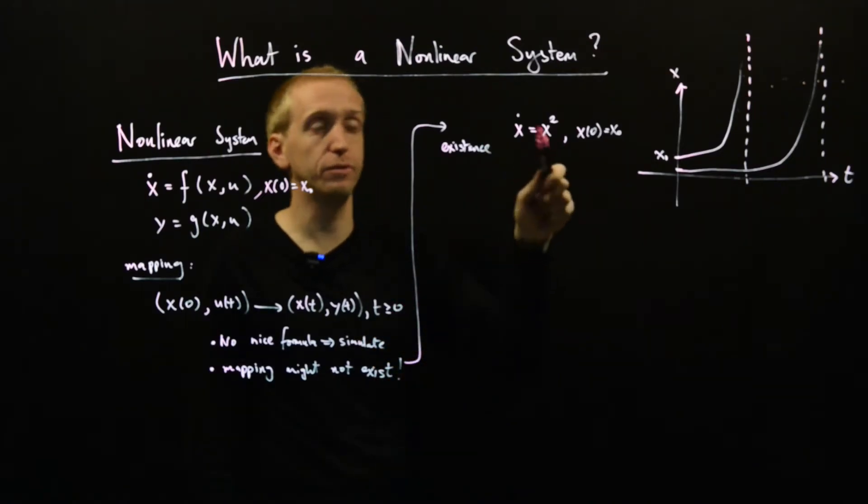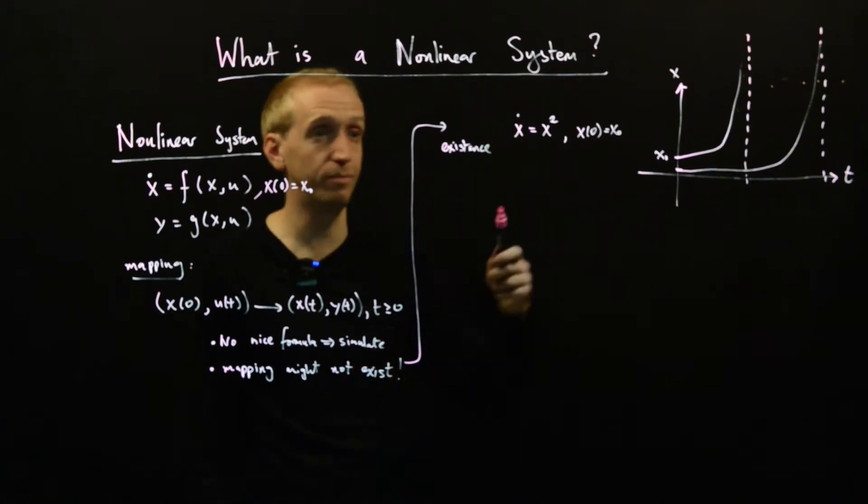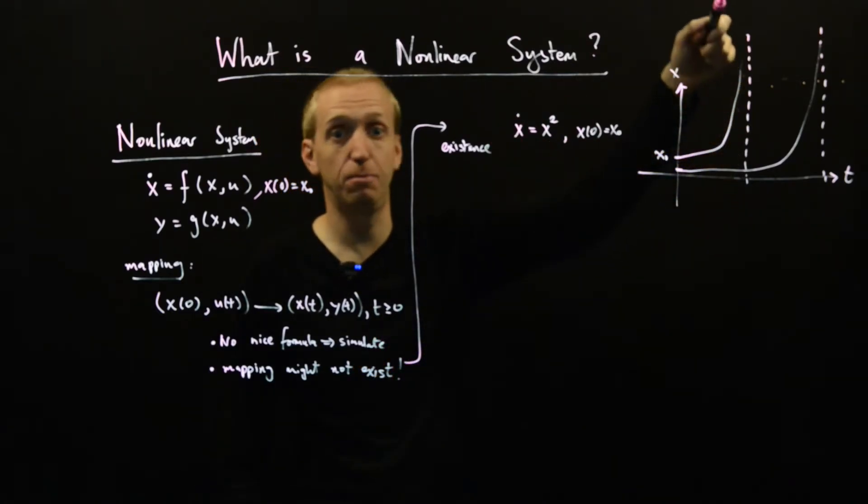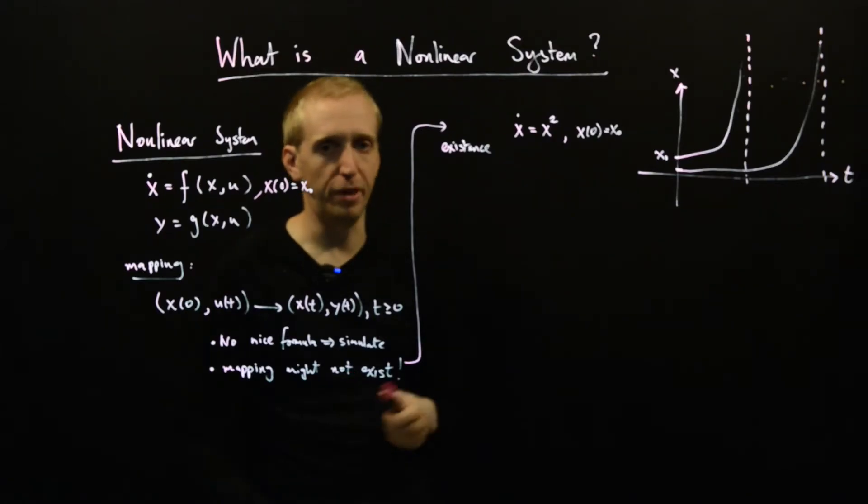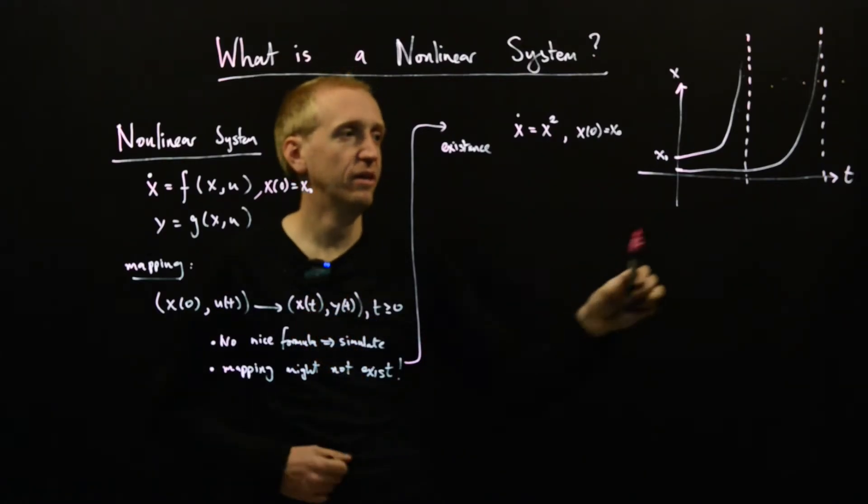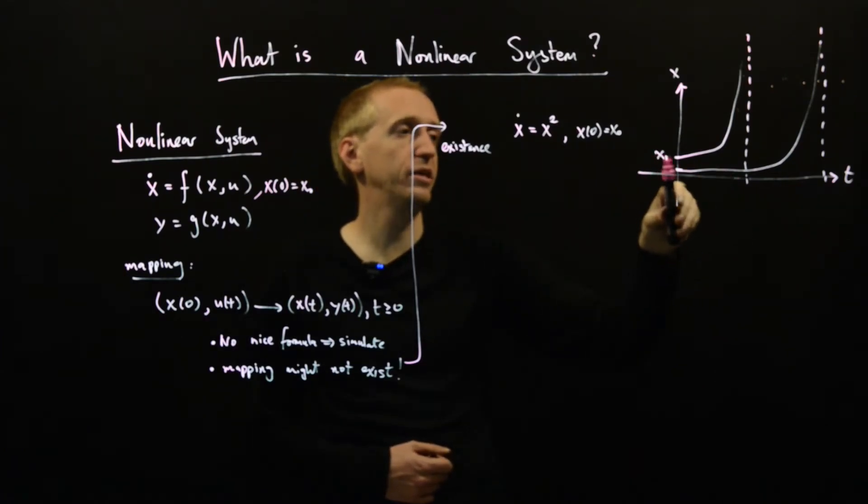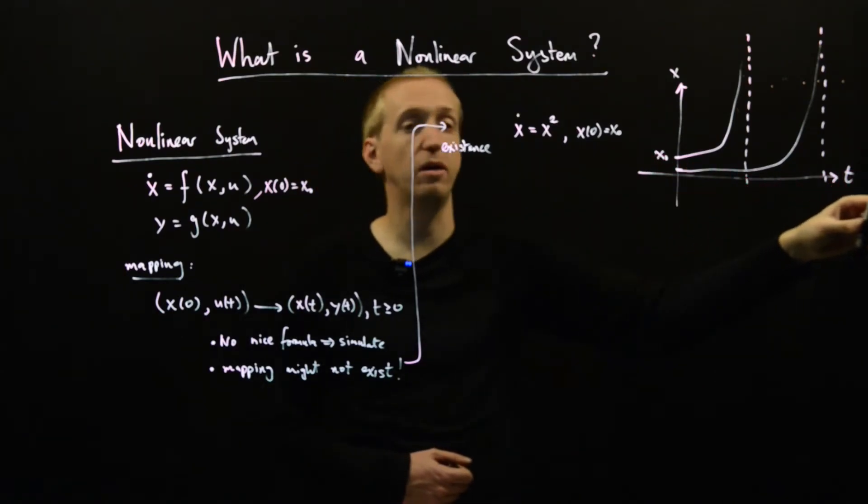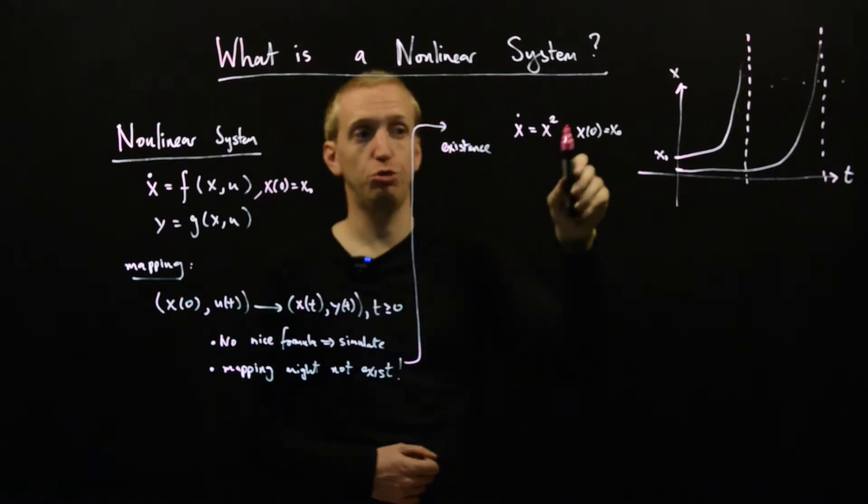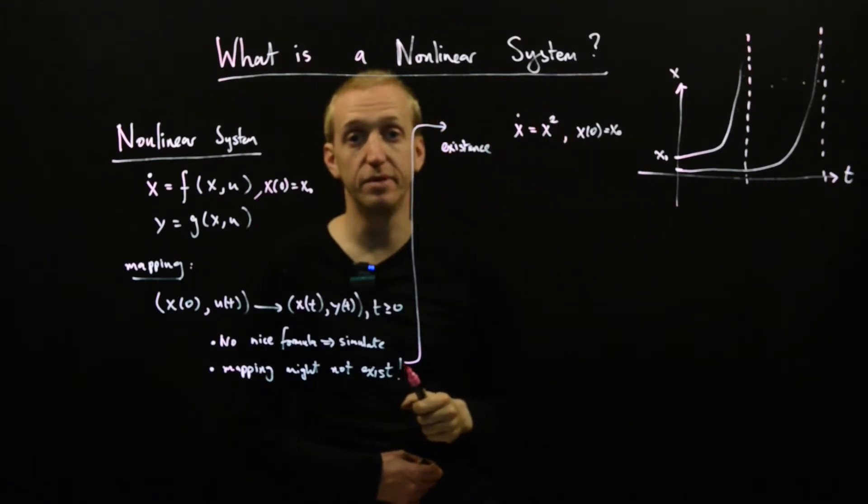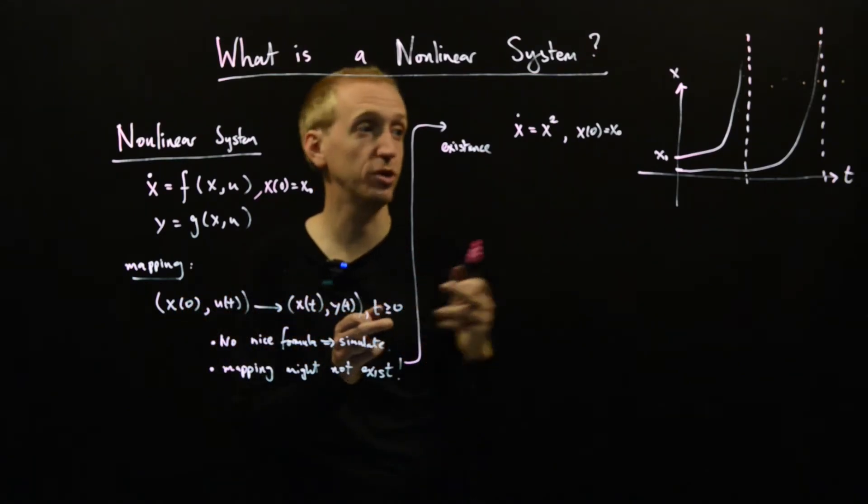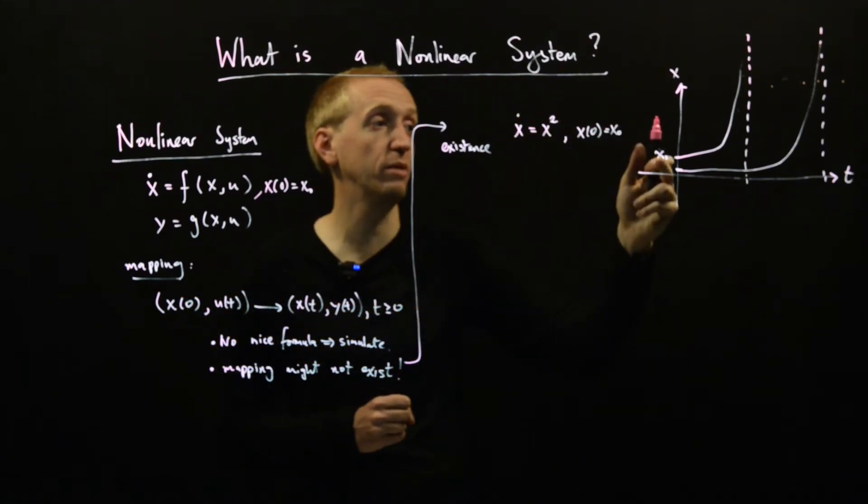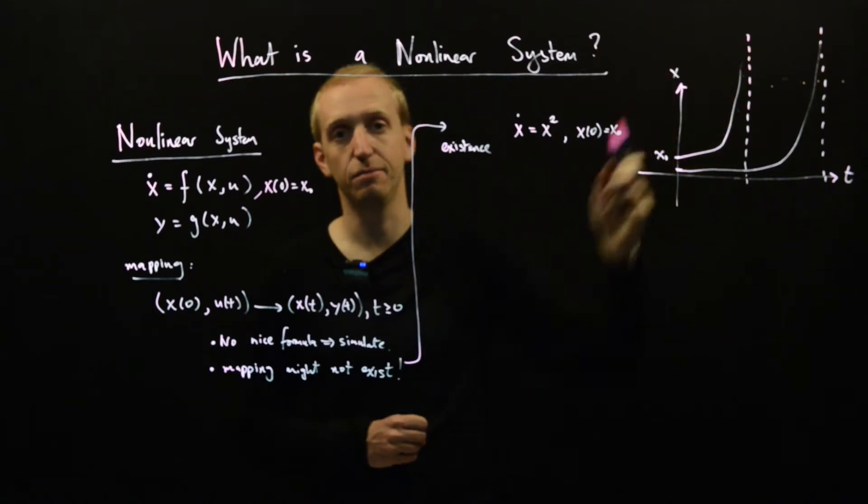So this differential equation displays what's called finite escape time. And if you go into the lecture notes or just try for yourself, try and solve this differential equation, you'll be able to actually find an explicit solution for these curves in this case. But the real point here is that depending on the initial condition, there will be times in the future for which this differential equation makes no prediction. So there's no mapping for all times into the future in this example. It will only make predictions a little way into the future.